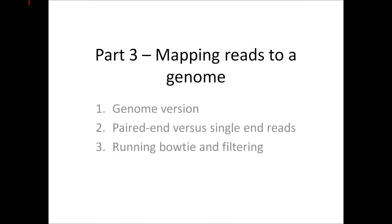By correct genome I mean not only the correct species to match the sample, but also the sequence version. As genome assemblies are added to and corrected over time, different versions or freezes are made. Choosing which version of a genome to use can be dependent on many factors, including matching other data in the lab or just choosing the latest version. But it is important to choose the right version at the beginning of a project, as the entire downstream analysis may have to be repeated.